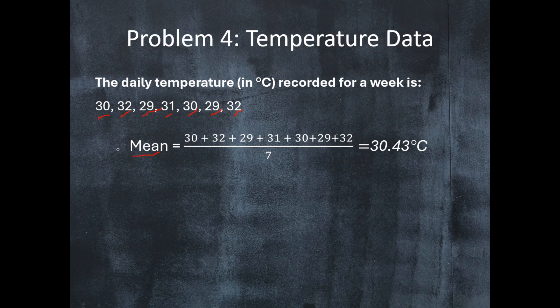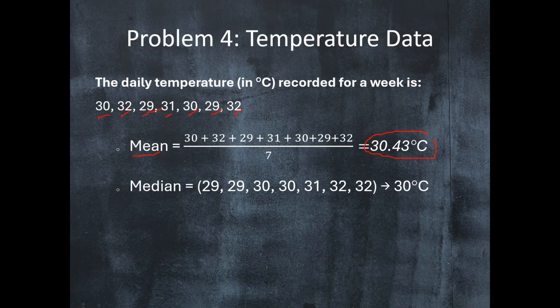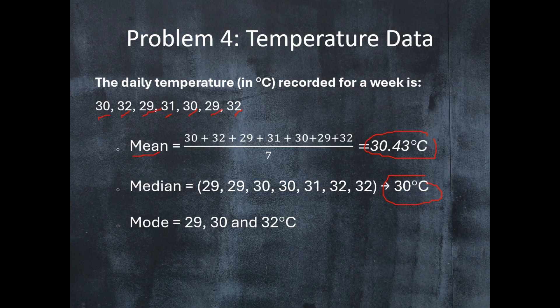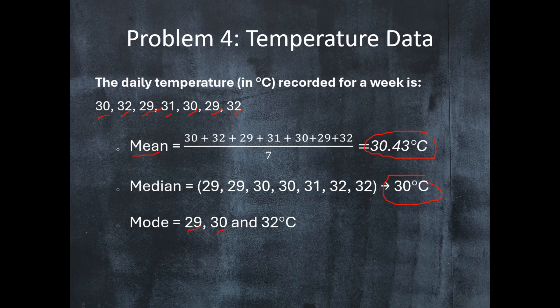Now the mean for this data set is 30.43 degrees Celsius. The median is 30 degrees Celsius. And the mode—actually we have three modes—these are 29 degrees Celsius, 30 degrees Celsius, and 32 degrees Celsius.